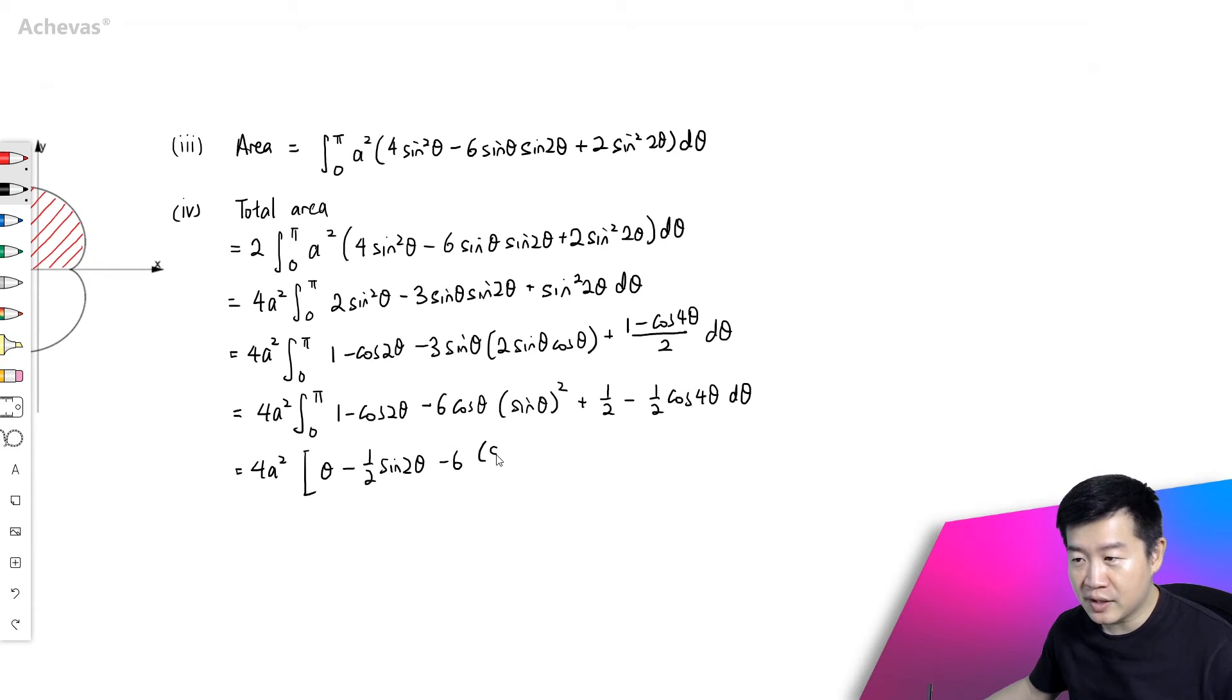This is going to be sine θ to the power of 3 divided by 3. Because this is the differentiation of this, so 3 and 6, this will become 2. So let me just rewrite this as 2 of sin³θ.